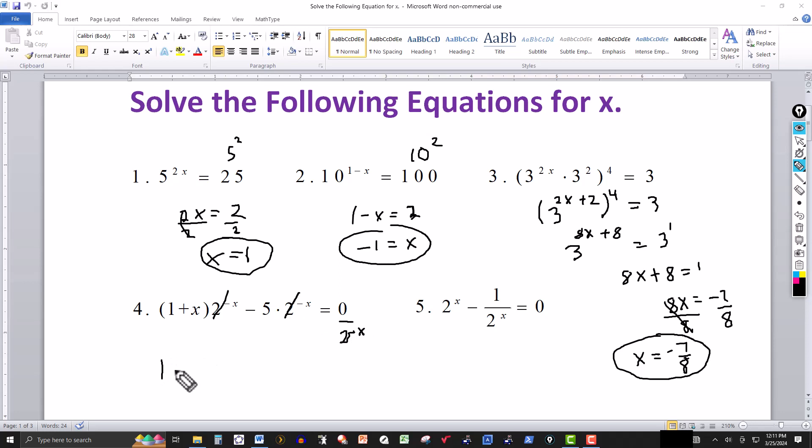I wind up with 1 plus x. This cancels out, and this cancels out, I get a minus 5, and then 0 over here. Now we just simply solve this linear equation for x. 1 minus 5 is minus 4, take it over, I isolate the x, and I get x is equal to 4.